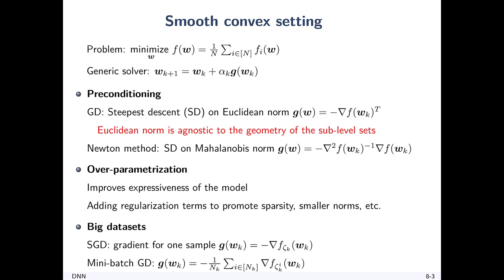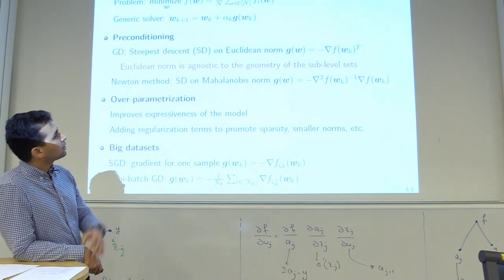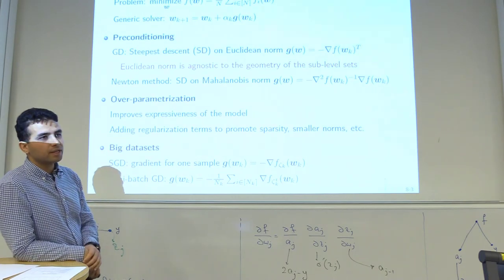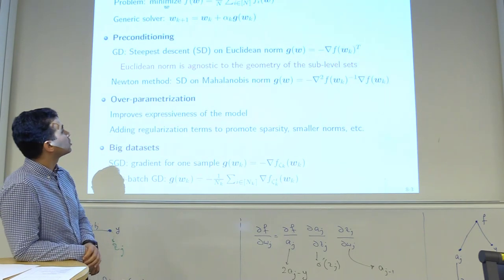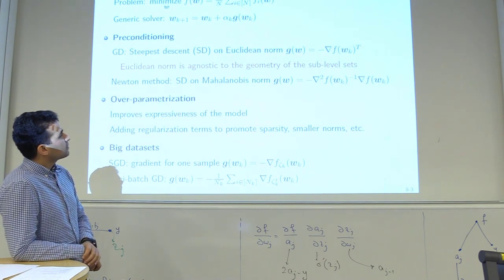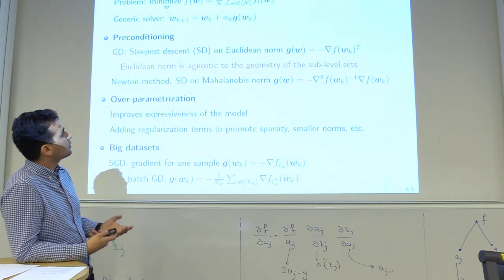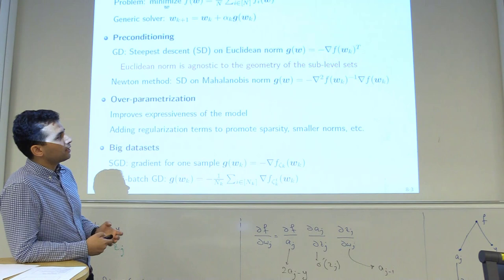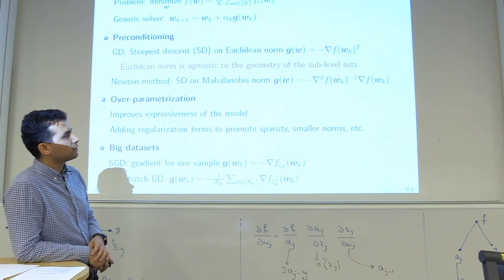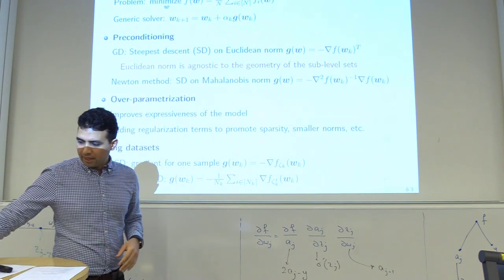The generic iterative solver is w_{k+1} = w_k + alpha_k * g, where g is the descent direction and alpha_k is the step size. Gradient descent is one example where g is minus the gradient, ensuring you go downhill at every iteration. We have seen the impact of preconditioning.